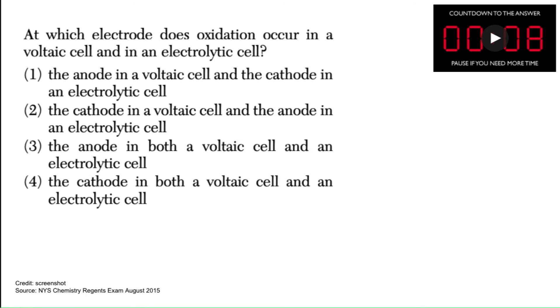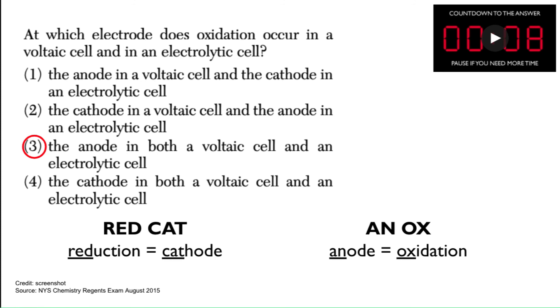Let's try another question. At which electrode does oxidation occur in a voltaic cell and in an electrolytic cell? Does oxidation occur in the anode in a voltaic cell and the cathode in an electrolytic cell or is it some other combination thereof? So read each of these options here. Pick which one you think is correct and pause the video if you need more time. So the answer for this one is the anode in both a voltaic cell and an electrolytic cell. Remember, red cat and anox. It works for both types of cells and it's pretty easy to remember. Just think of a red cat and an ox.